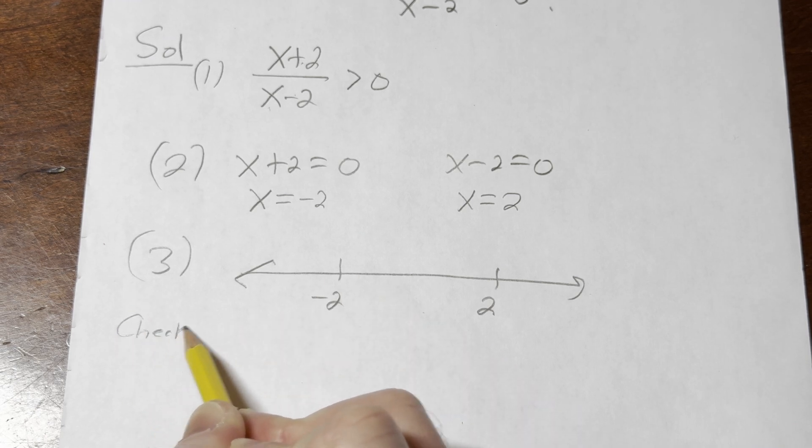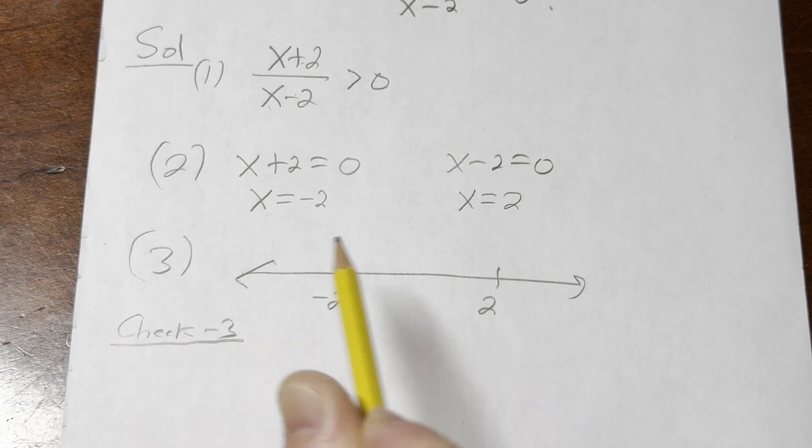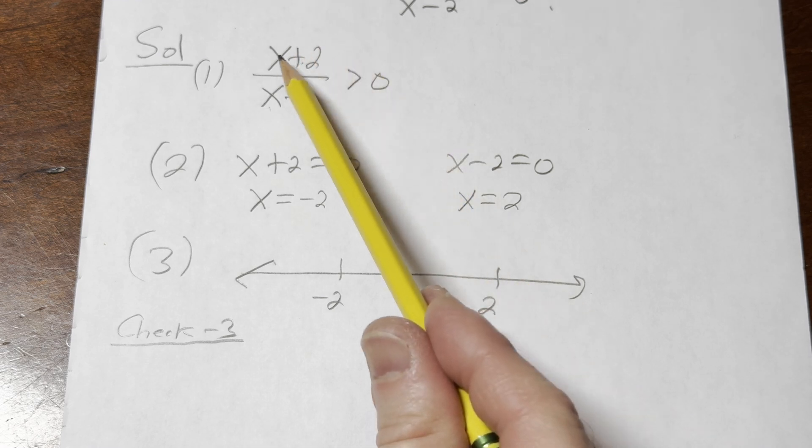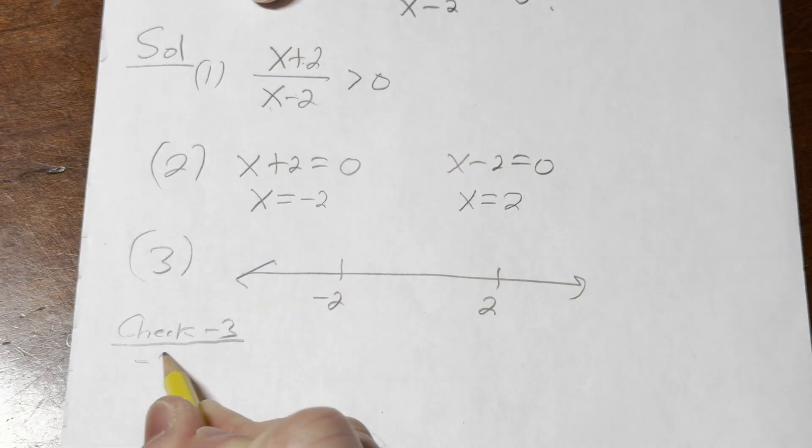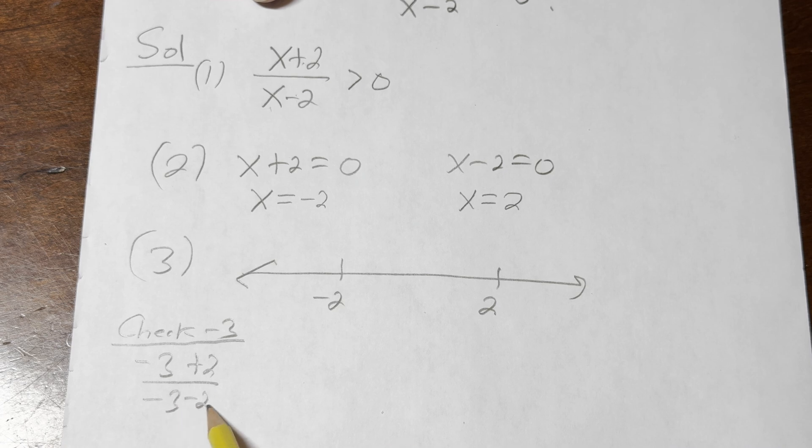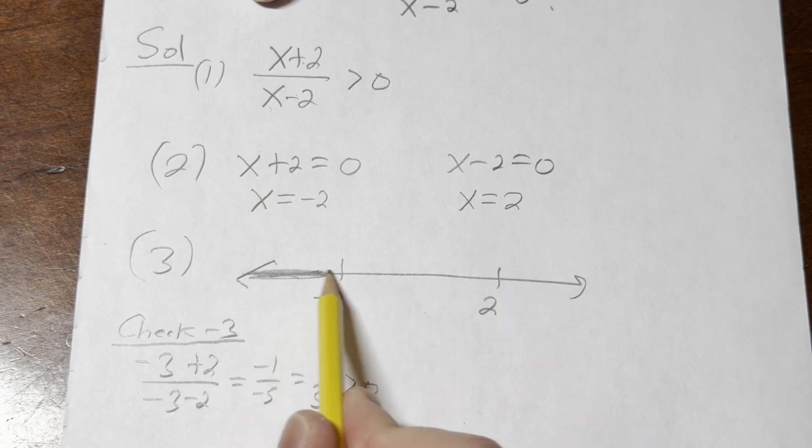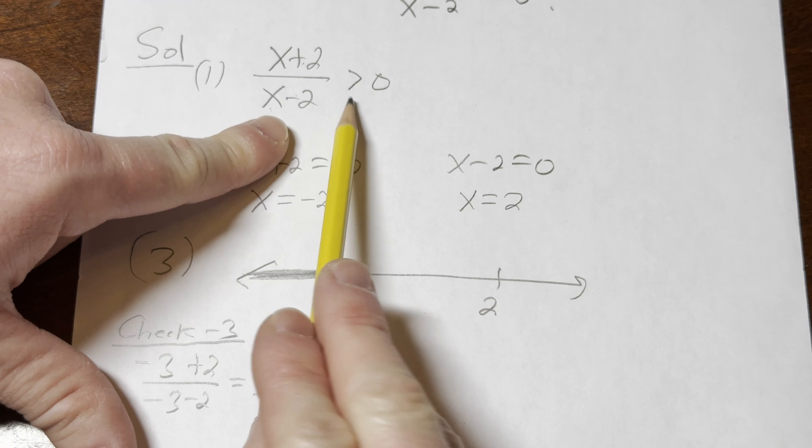So let's check -3. So I'm going to go ahead and put the -3 here where the x is. So it will be -3 + 2 over -3 - 2. That's equal to -1 over -5 which is equal to 1/5 which is positive. That's true. So we shade. Right. Because it's greater than 0. It's true.